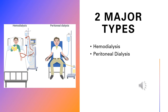Peritoneal dialysis is done in the peritoneal cavity, the abdomen. The patient has a catheter that can look kind of like a peg tube, a feeding tube. Dialysate is run into the abdominal cavity, and it uses diffusion to pull the waste out of the body that way, and then it comes back out into the lower bag as effluent. Effluent comes out with hemodialysis as well, and it usually just looks like urine.